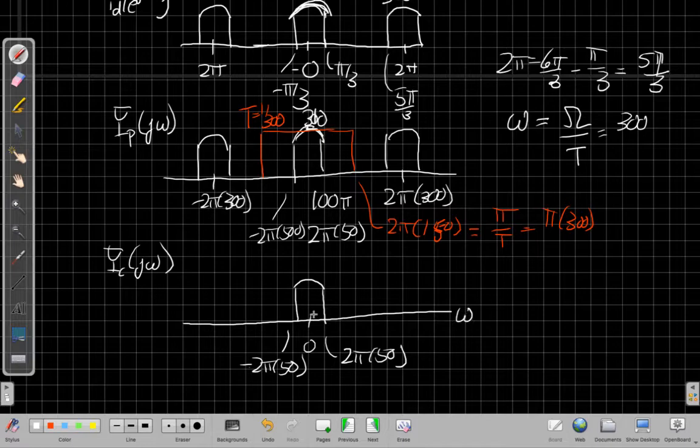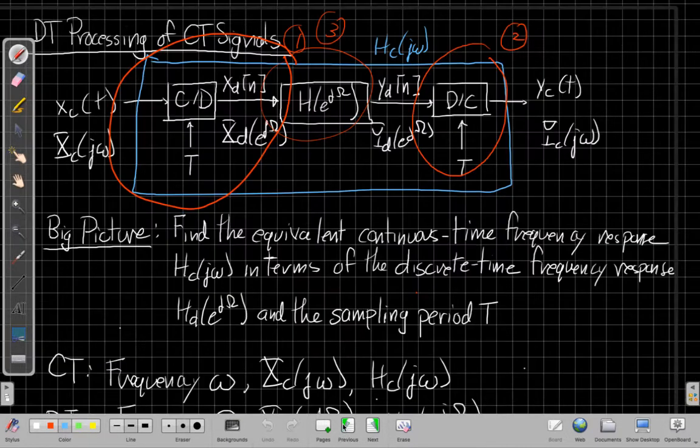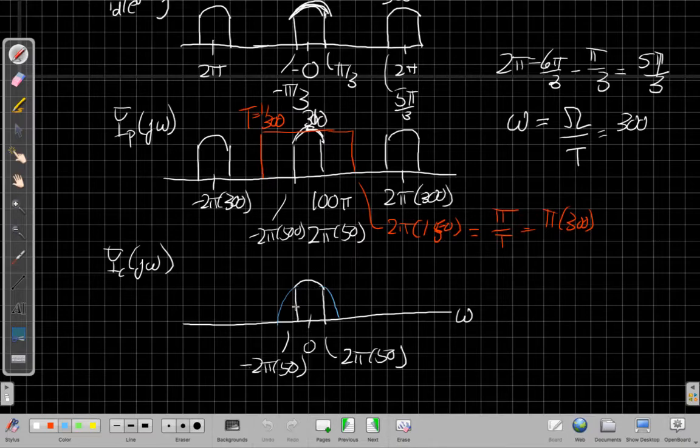So I started with the rainbow. If I use blue to draw my original signal, it looked like this. And my discrete time system, by the time I go through all those steps, I sample, filter, and go back to continuous time...